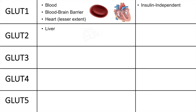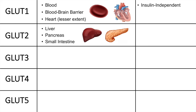For GLUT2, these are found in the liver, the pancreas, and the small intestine. These are also insulin independent, and they have a high Michaelis-Menten constant, or high Km, which means they have a very low affinity for glucose. So the liver, pancreas, and small intestine only uptake glucose through GLUT2 when glucose concentrations are very high — for example, the liver will uptake glucose to store as glycogen. The pancreas does this too: beta cells uptake glucose when concentrations are high, and then release insulin to compensate.